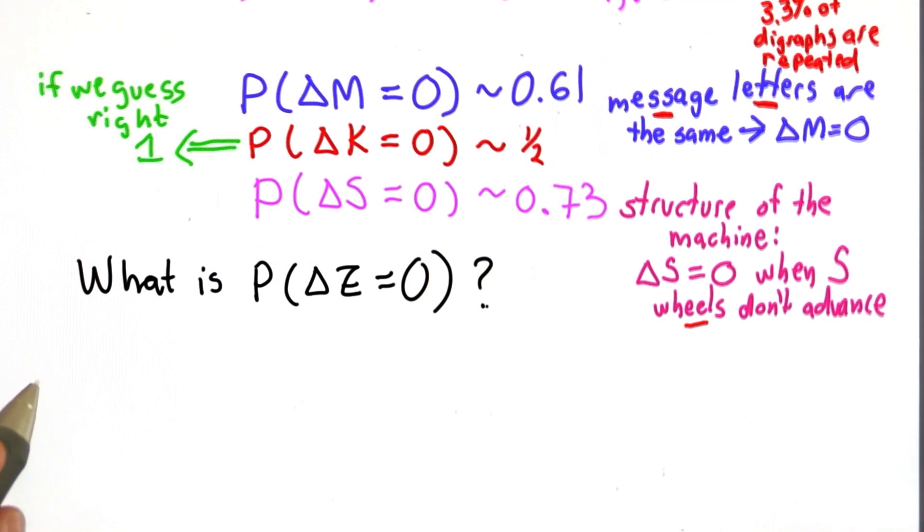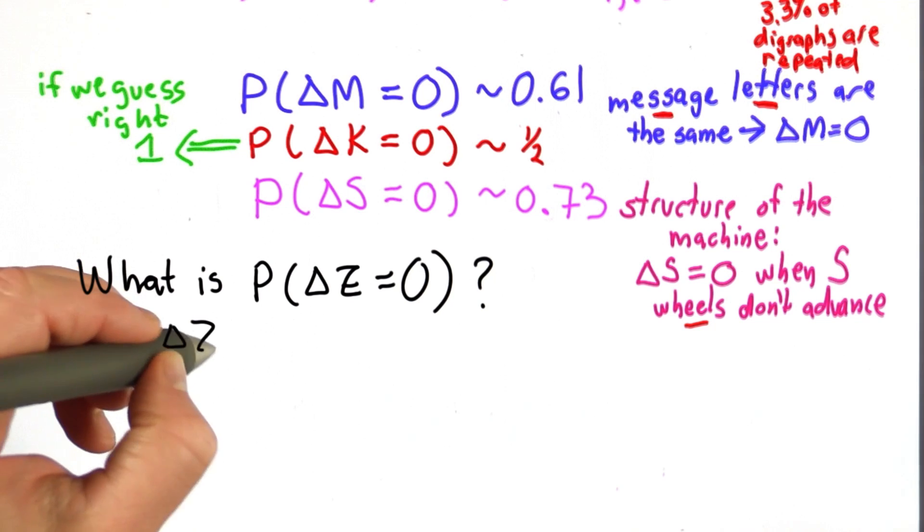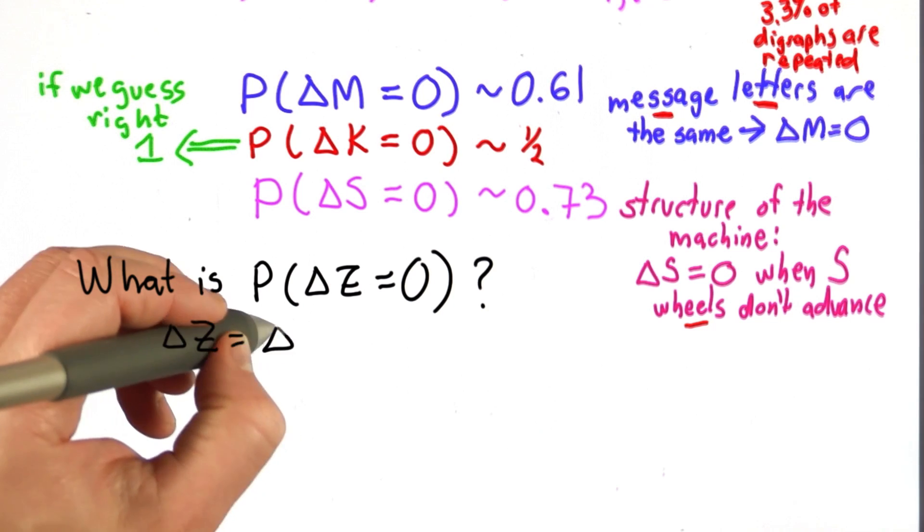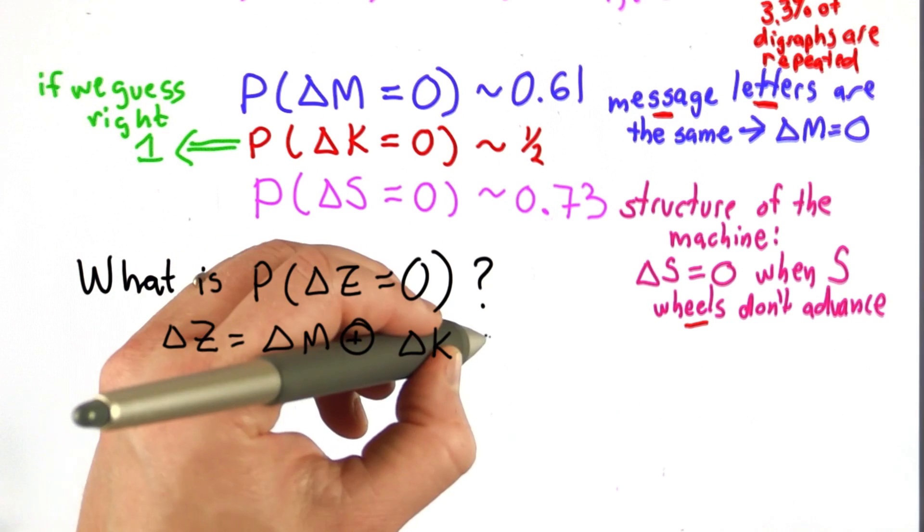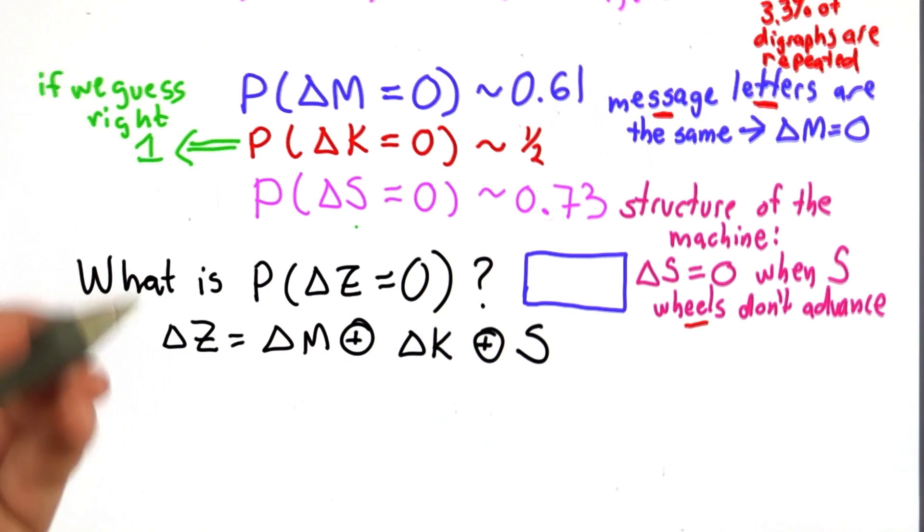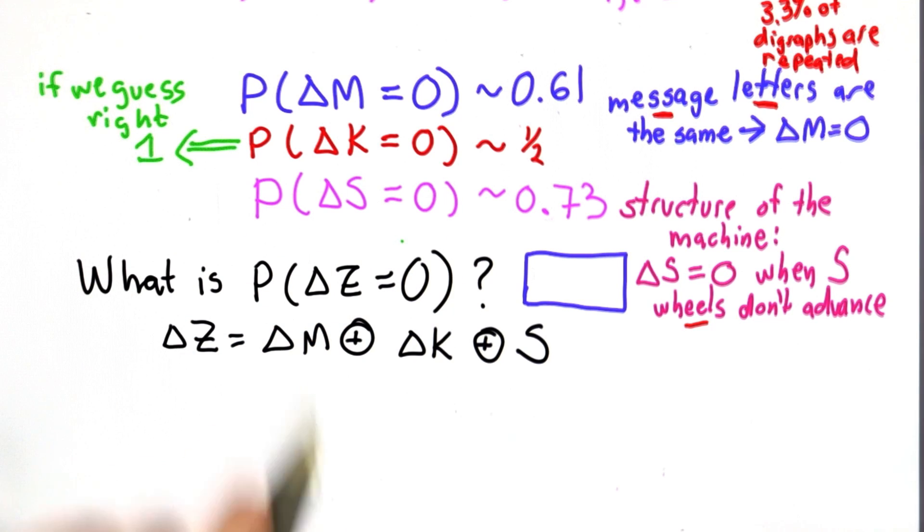And remember that what delta Z is is the XOR of delta M, delta K, and delta S. So to solve this, you need to think about all the different things that would make delta Z equal to 0 and compute their probability.